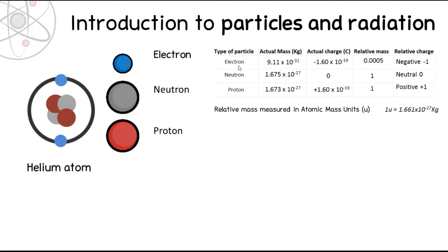For the electron, it's got a very low actual mass - 9.11 times 10 to the minus 31 kilograms, which is a very small number. The neutron is about 1.67 and the proton is also about 1.67, both times 10 to the minus 27. So they're very small, but not quite as small as the electron at 10 to the minus 31.